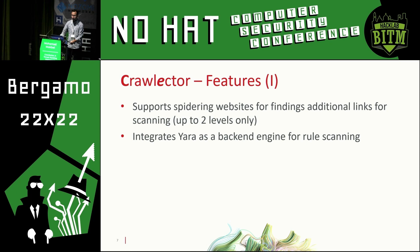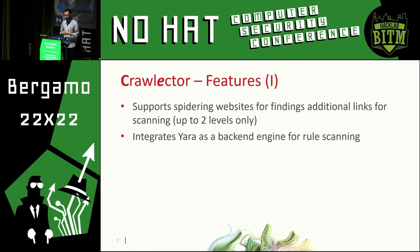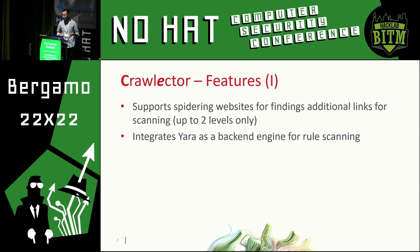It uses YARA, which you're all familiar with, as a backend engine for rule scanning. As part of the design phase, I decided whether to write my own domain-specific language for detecting suspicious objects — which I have done in the past — but after looking into YARA, especially the C API, I decided to settle on it. I found it to be the perfect candidate for this job. The C API is extremely clean and works as expected. I recommend you use it in your own projects so you don't have to reinvent the wheel. All the constructs you need in terms of primitives, conditions, YARA has it.